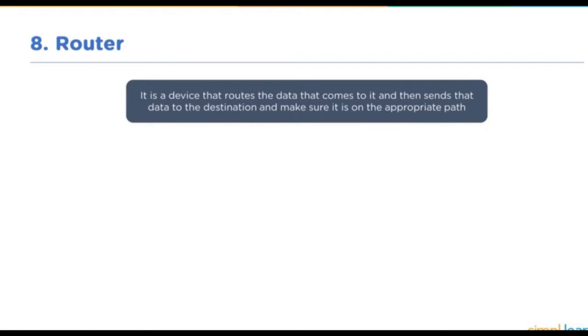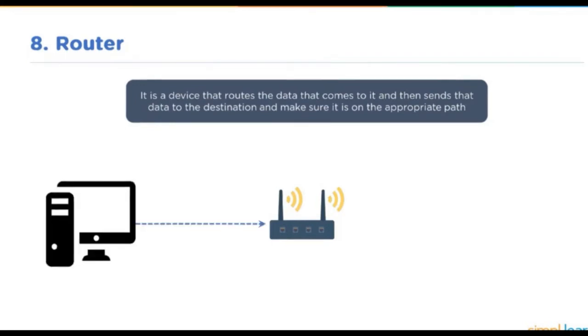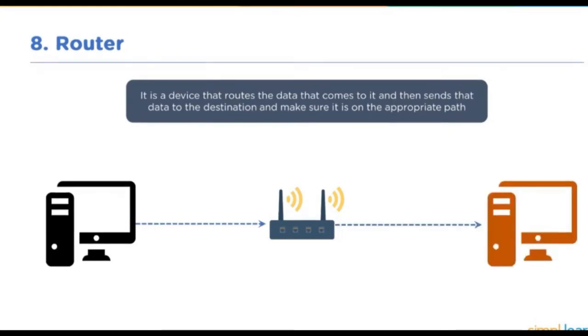A simple example of a router is the Wi-Fi router device that you probably use at home to connect to the internet. Your local devices can connect to the router, and the router can route the traffic onto the internet, making it possible for you to connect to the internet using your local systems.